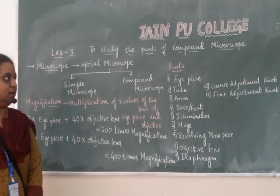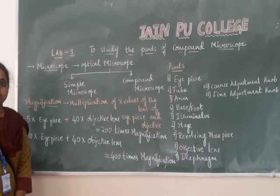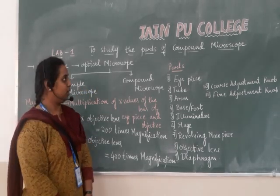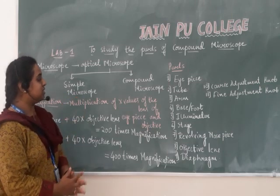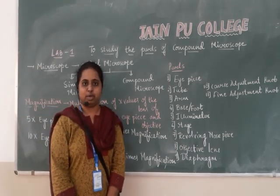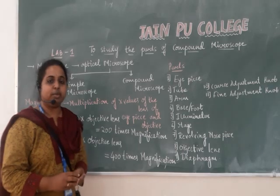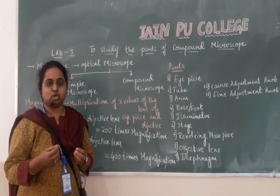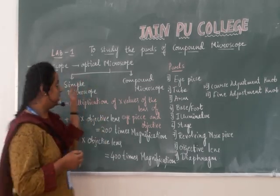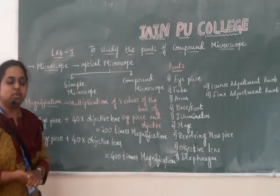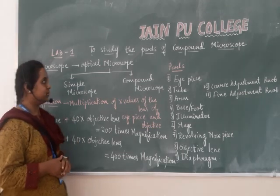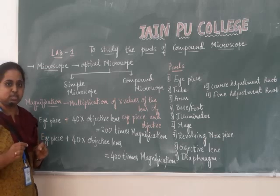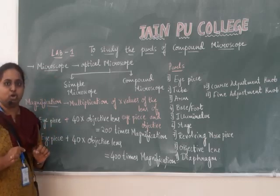Today, I will be giving a demonstration on the first practical, that is, to study the parts of a compound microscope. Before we start, we should know what is the meaning of microscope. Microscope is an instrument where we are able to view minute organisms or objects. The term microscope can be split into two parts: micro, which means tiny or microscopic objects, and scope, which means to view or to see.